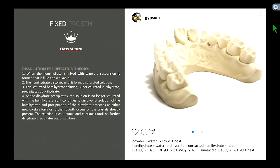Specifically, hemihydrate plus water gives you dihydrate plus some unreacted hemihydrate plus heat. The important part of this setting reaction is understanding that this is a dissolution-precipitation theory. As this reaction happens, you have crystals or nuclei that start to crystallize and propagate, and you get a firmer consistency. It starts off watery, gets fuller in body and less viscous, and eventually it sets — these crystals are growing and solidifying the gypsum.